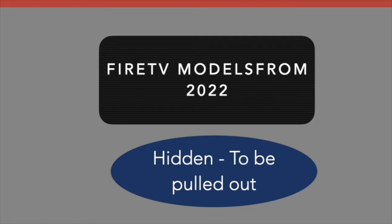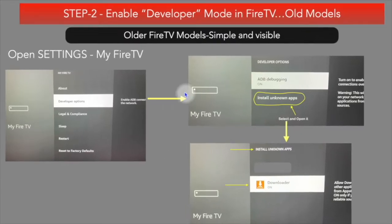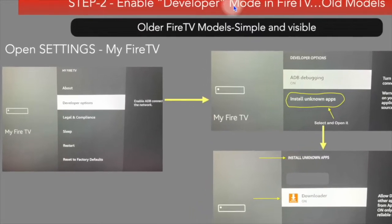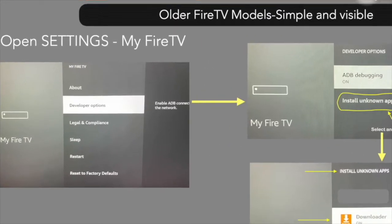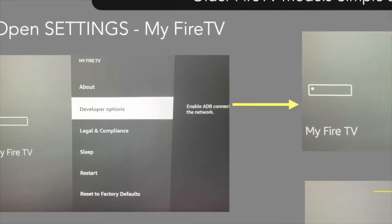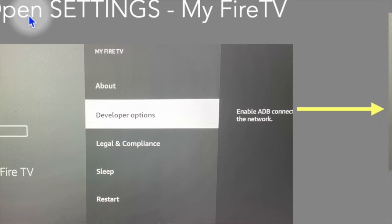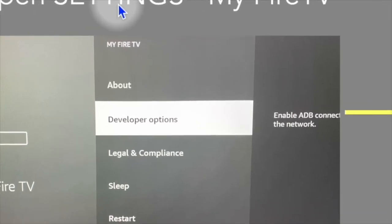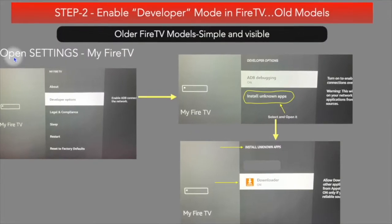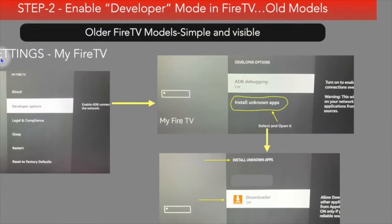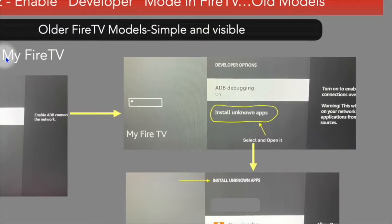On the old model: open Settings, open My Fire TV, and you will see the Developer Option. In Developer Option, select Install Unknown Apps and open it. There you will see Downloader — set it to On.